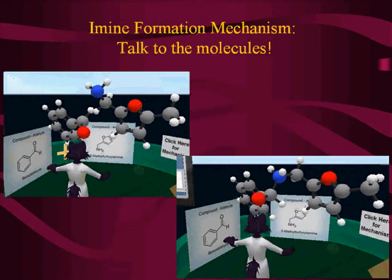Another thing we've done is to actually talk to molecules and have them react with each other. Here we have an amine and an aldehyde forming an imine — there are three steps: you add them and then lose water. When you type 'next' or 'back' in chat, each intermediate is actually minimized, so it's a realistic shape of what it actually looks like. It's very different from drawing on paper where everything is flat. When you do this, it's very obvious that one of the intermediates is flat, but the other structures are at all kinds of angles.